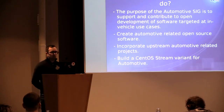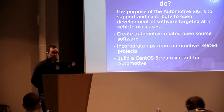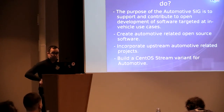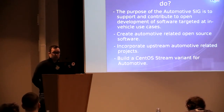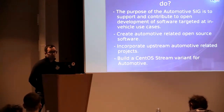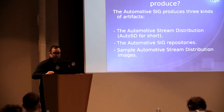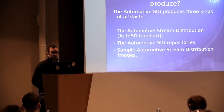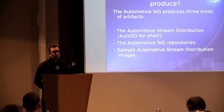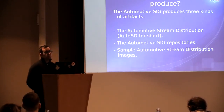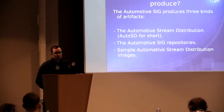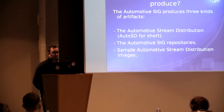So what does the Automotive SIG do? The purpose of the Automotive SIG is to support and contribute to open development of software targeted at in-vehicle use cases. We create automotive-related open-source software. We incorporate upstream automotive-related products into our automotive distribution, and we build a CentOS Stream variant for automotive. The SIG produces three kinds of artifacts: the Automotive Stream distribution — sometimes called AutoSD for short — the Automotive SIG repositories, and some sample images for you to play around with and develop on.